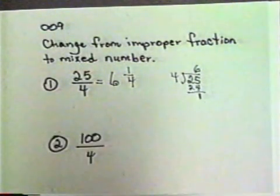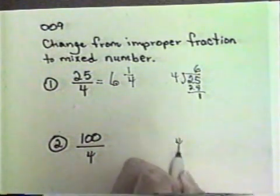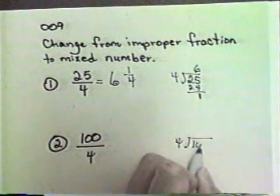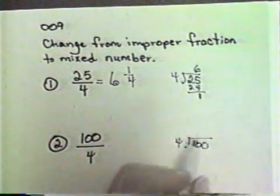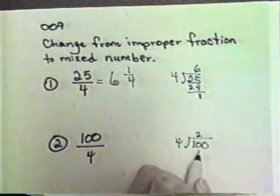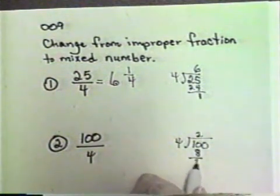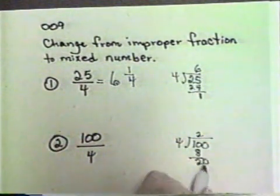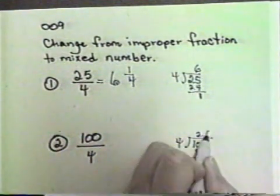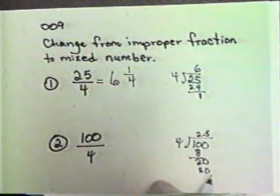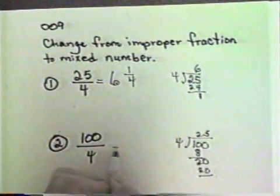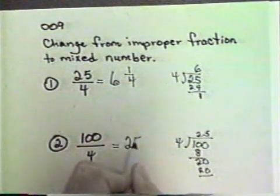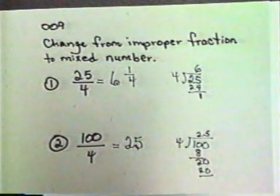Let's do one more. Suppose we had 100 fourths. So we want to see how many fours there are in 100. Let's divide four into 100. Four will go into 10 two times. Two times four is eight. We subtract and get two. Bring down our zero. Four will go into 20 five times. Five times four is 20, and we don't have anything left. So 100 fourths is the same as 25 wholes. We don't have any fractions left over.